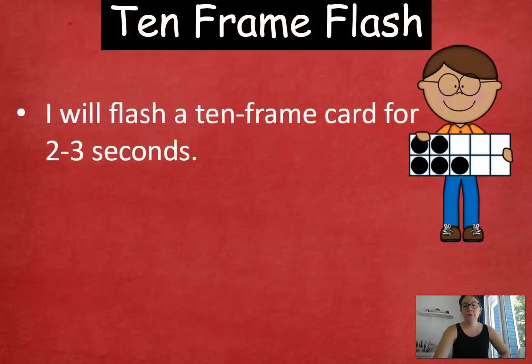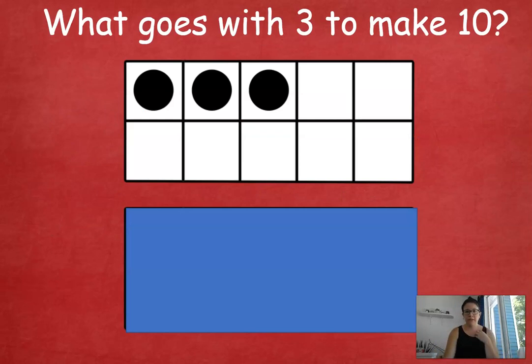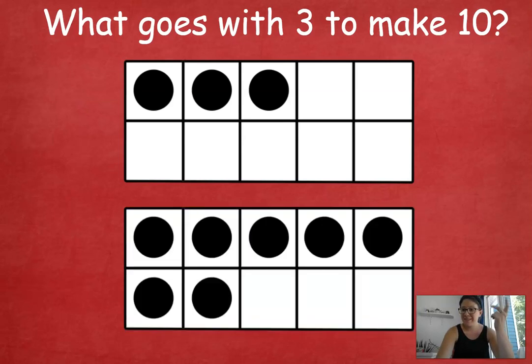Our first task is I'm going to show you a 10 frame, and then I'm going to snap my fingers. What I want you to tell me is how many more we need to get to 10. So don't tell me how many are in the 10 frame, tell me how many more we need to get to 10. Let's do the first one together. You see a 10 frame with three circles in it. How many more do we need to get to 10? 3 plus what is going to equal 10? I'm going to snap my fingers, and you're going to say 7. Good job.